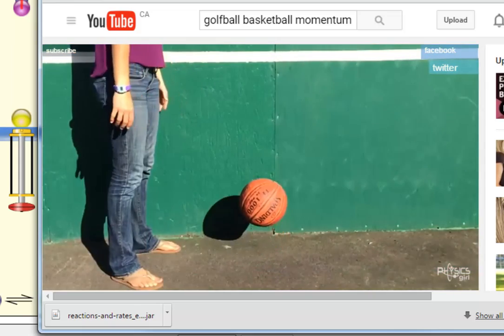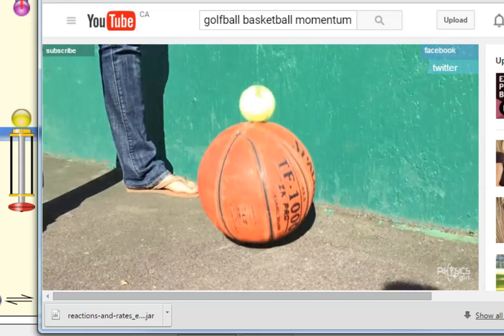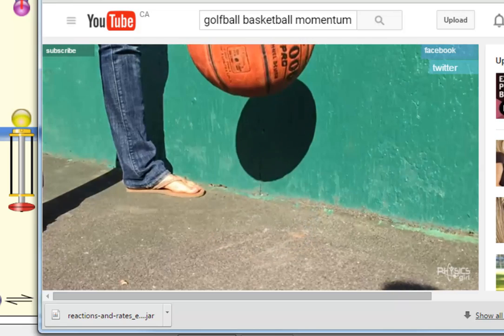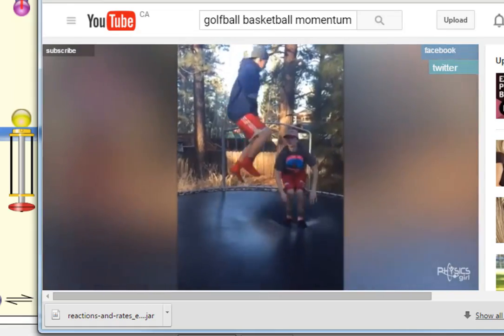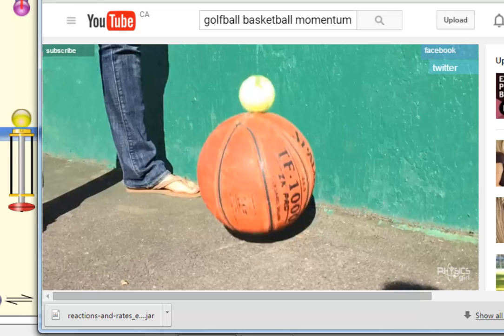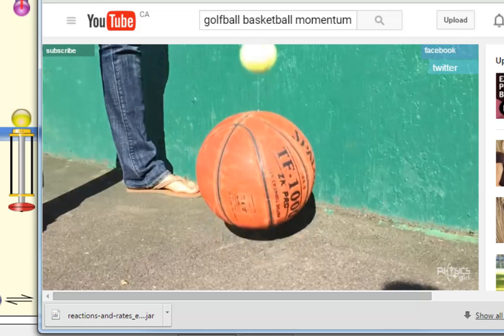As the basketball bounces, it compresses, storing elastic potential energy. As it releases, it springboards the tennis ball upward just at the right moment. This is like the double bounce on a trampoline when you jump right before someone else. In the same way, the basketball stores energy in its compression and is able to push the tennis ball.